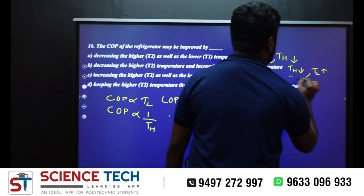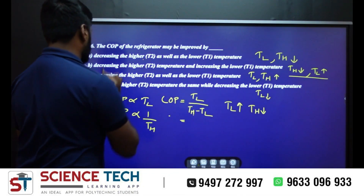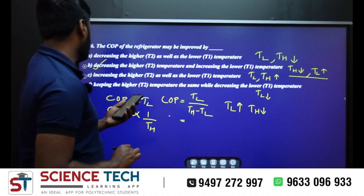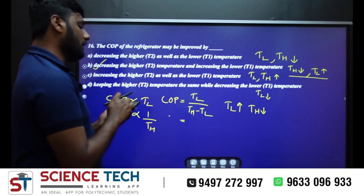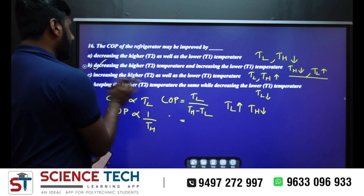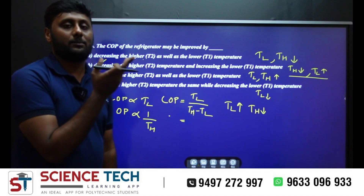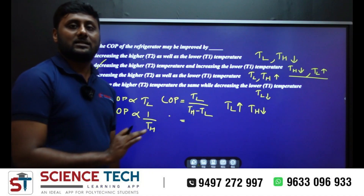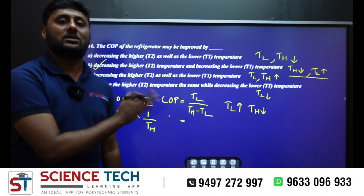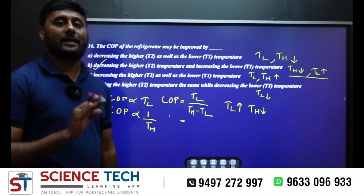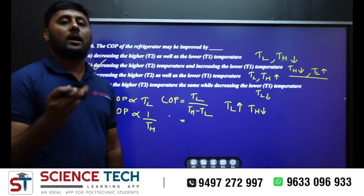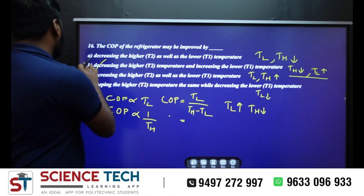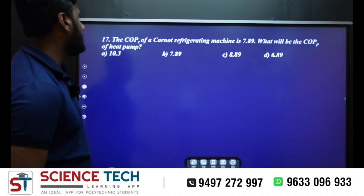The correct answer is the second option: decreasing the highest temperature and increasing the lowest temperature. Just know the proportionality — COP is directly proportional to TL and inversely proportional to TH.